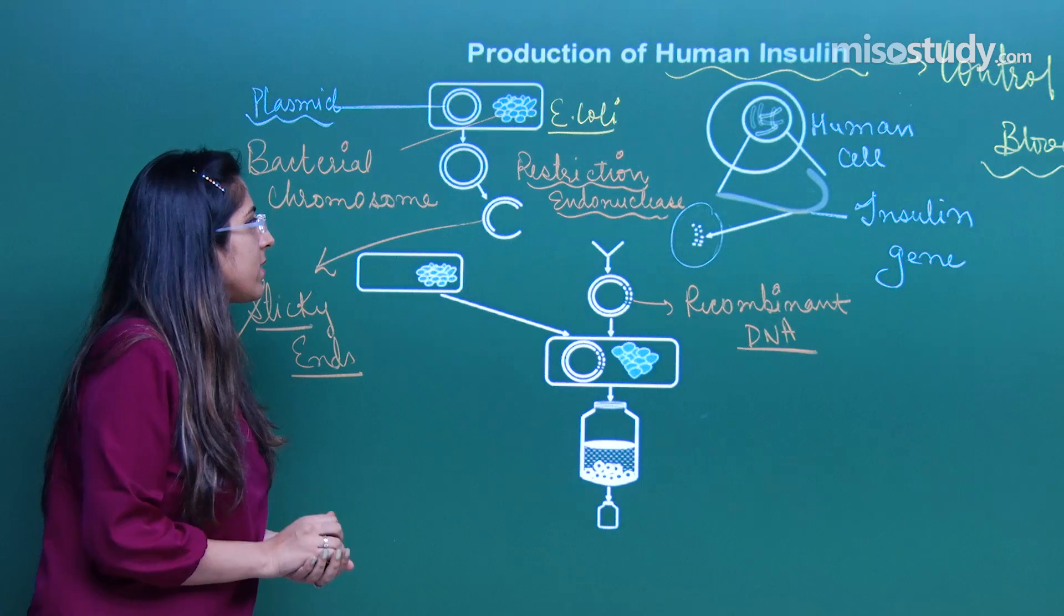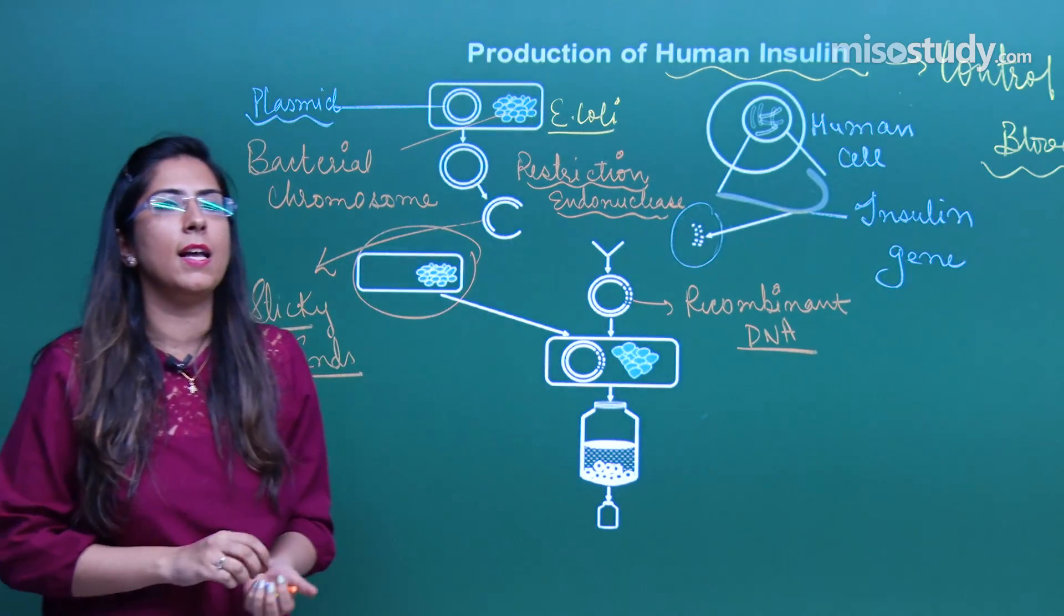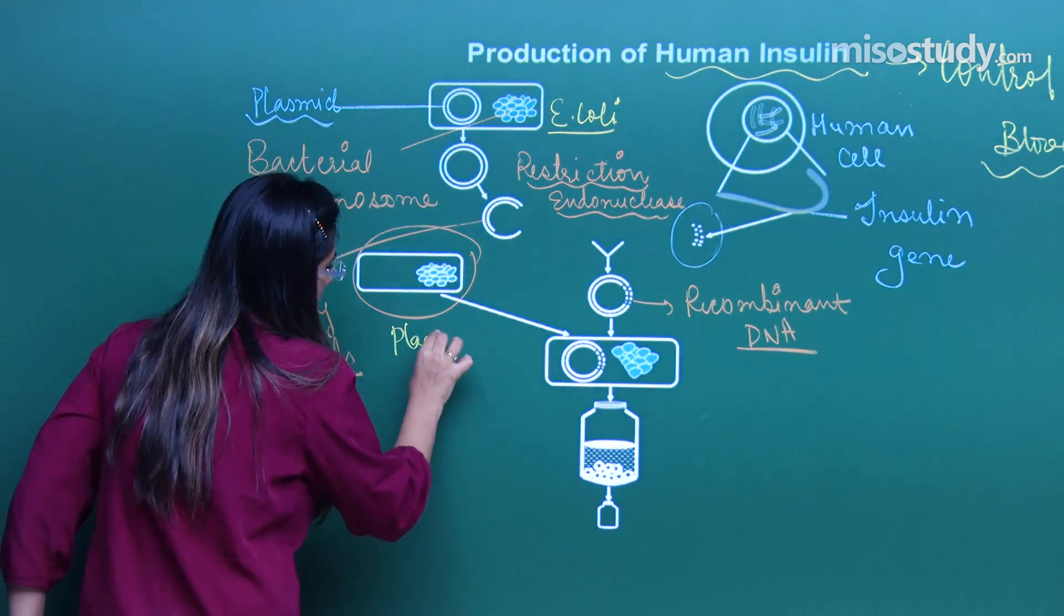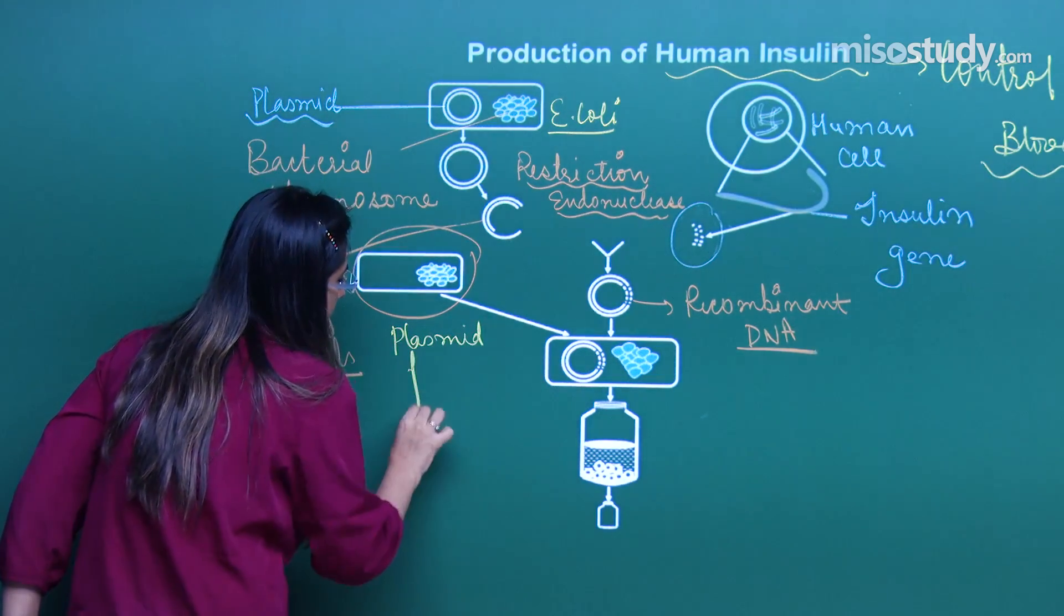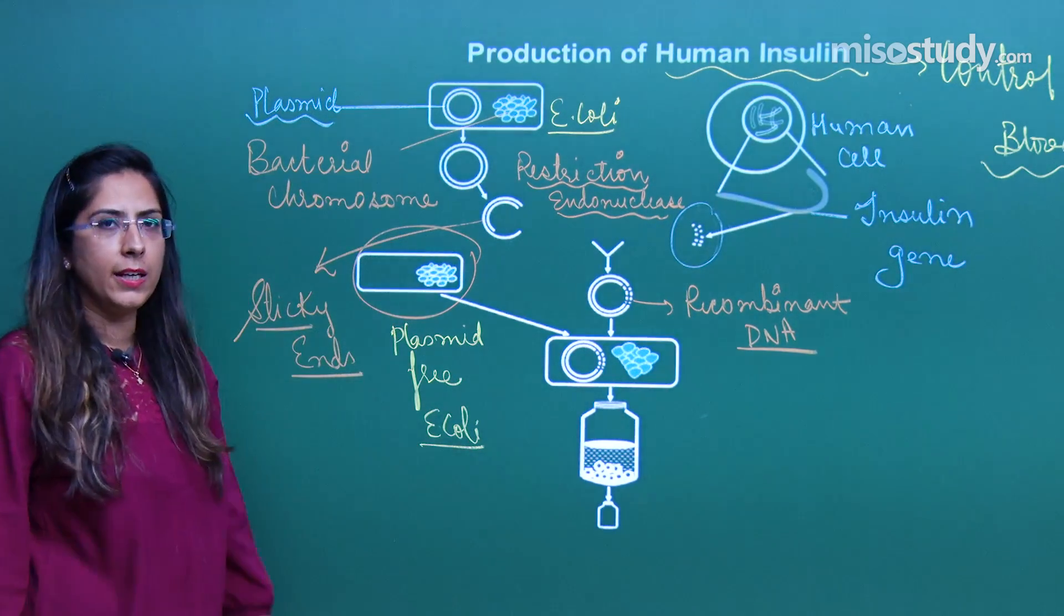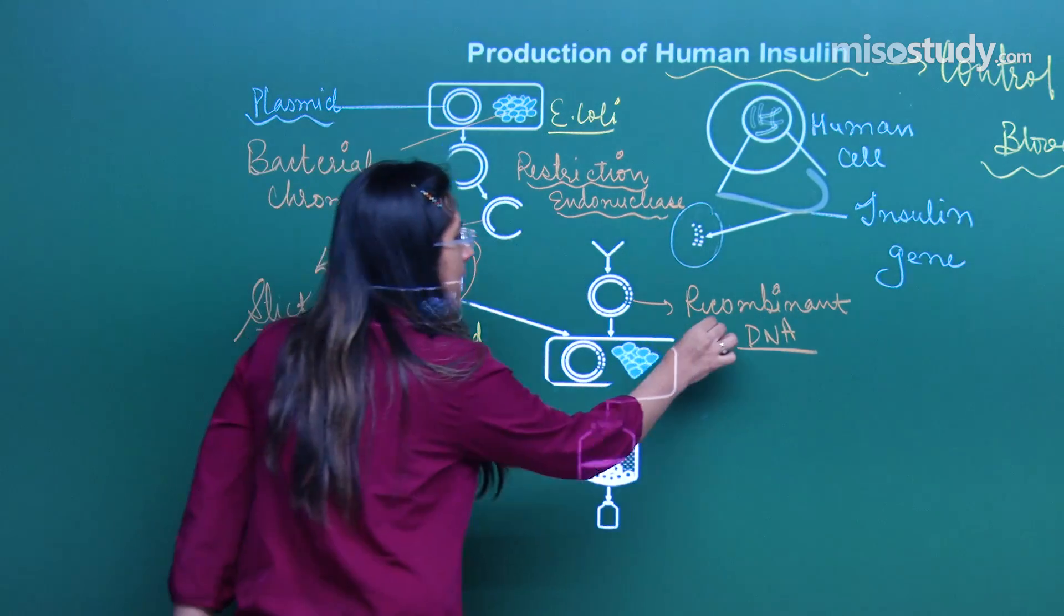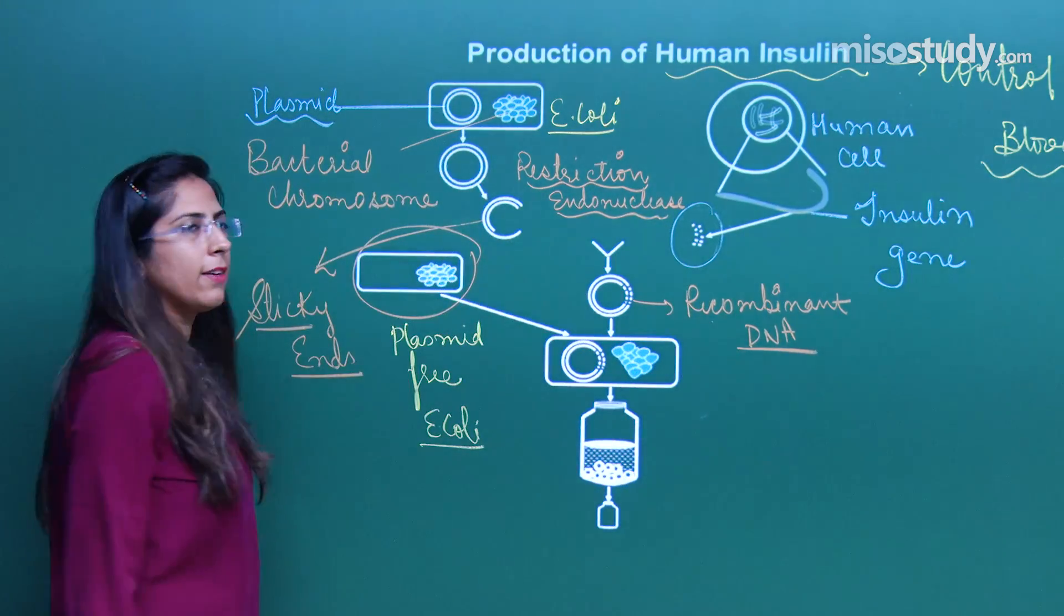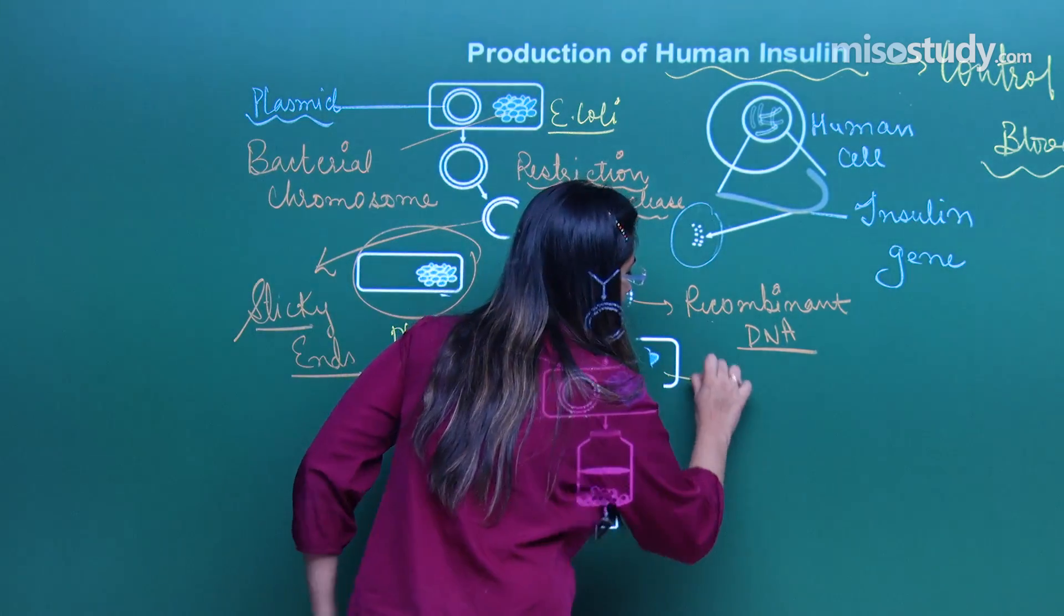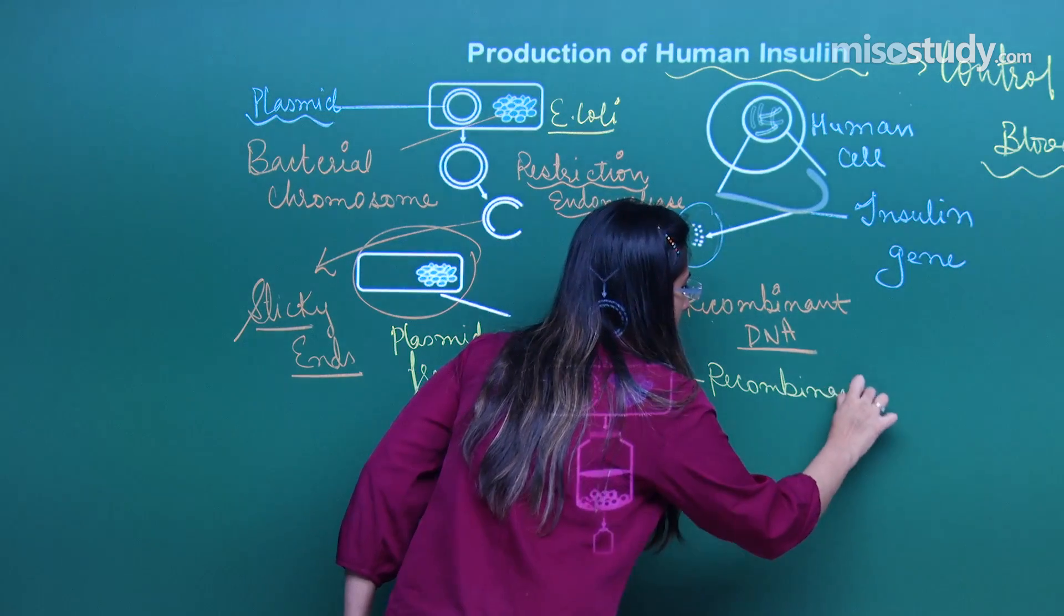Now what I will do next? I will take one cell and that cell will be plasmid free. This is plasmid free E. coli cell. What next I will do? I will insert this recombinant DNA into this E. coli cell which is plasmid free. What I will get next is recombinant cell.